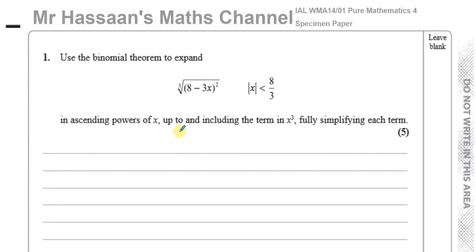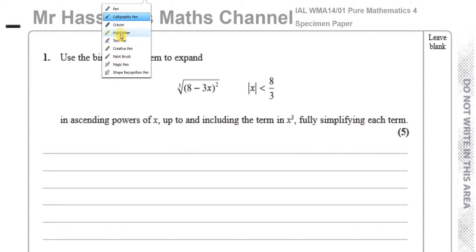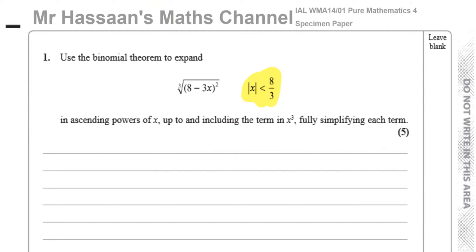The first question is about the binomial theorem, very similar to old C4-type questions. They ask us to expand a bracket up to and including the term in x cubed, fully simplifying each term. There's a note that the modulus of x is less than 8 over 3. We don't need that for the expansion itself, but we do need to understand it — sometimes they ask you to state the range of values of x for which the expansion is valid, which is exactly what that condition tells us.